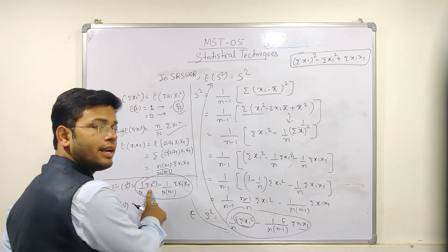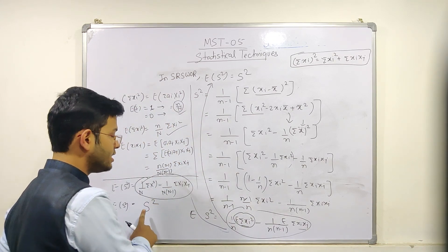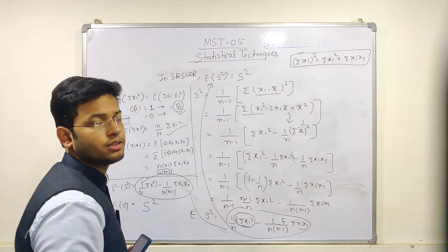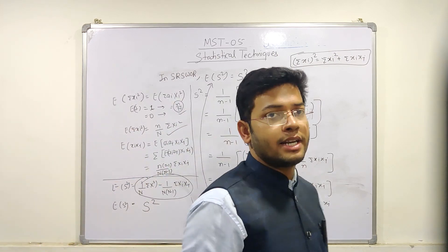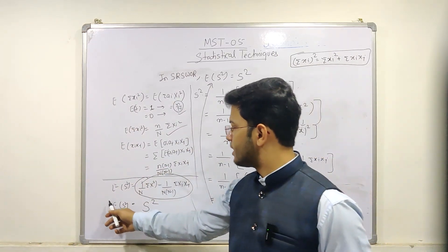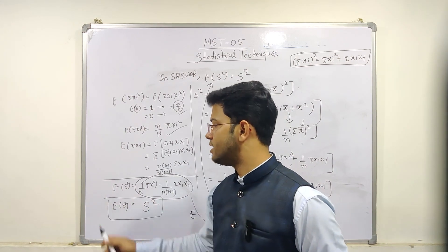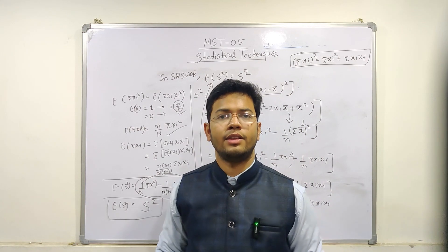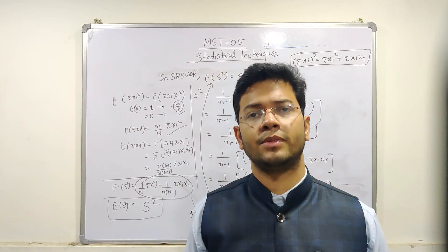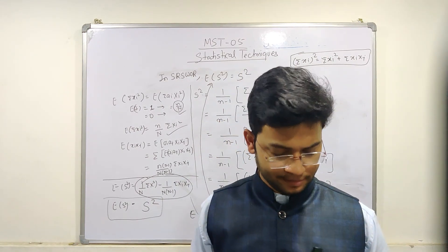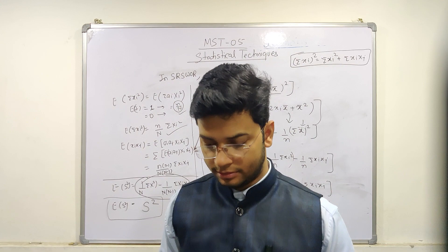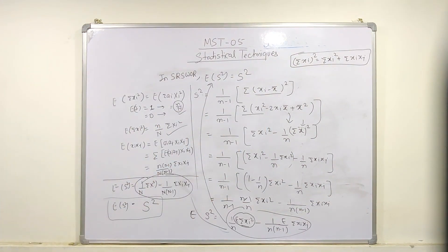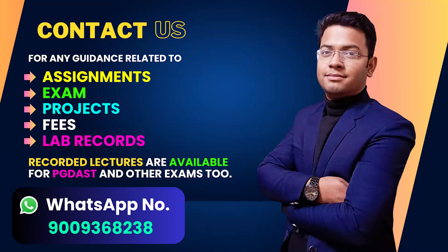So the result is E(s²) = S², the population mean square. This is the result of this theorem. Thank you so much, and part 3 will come soon.